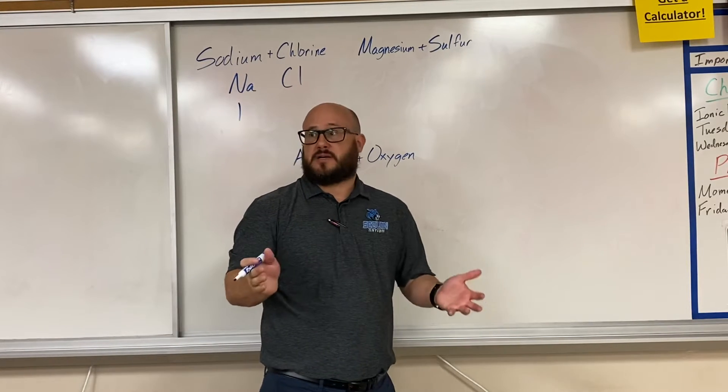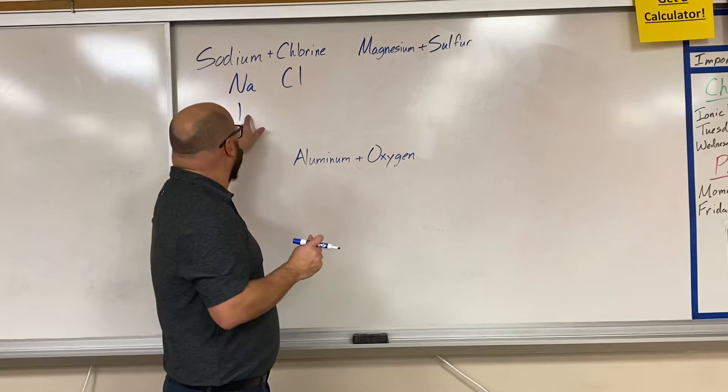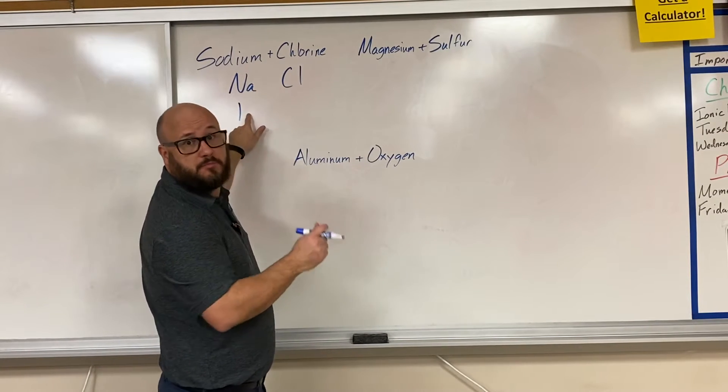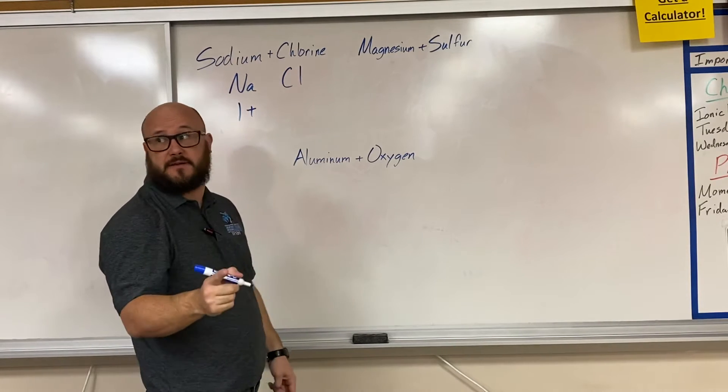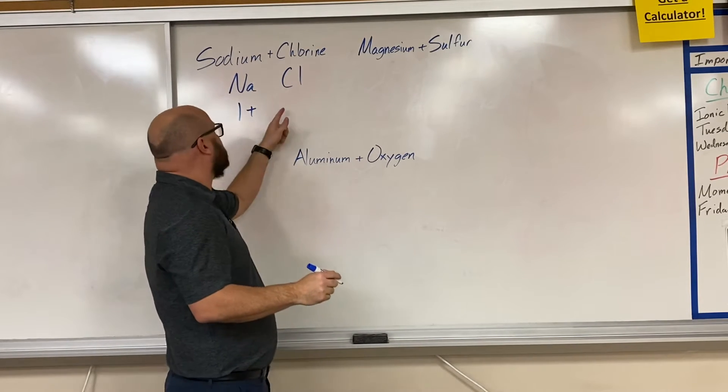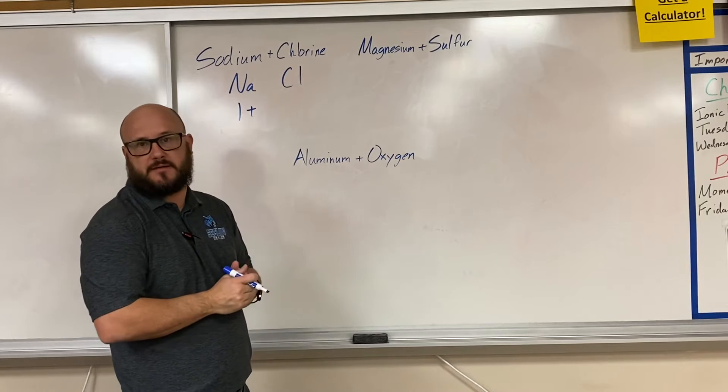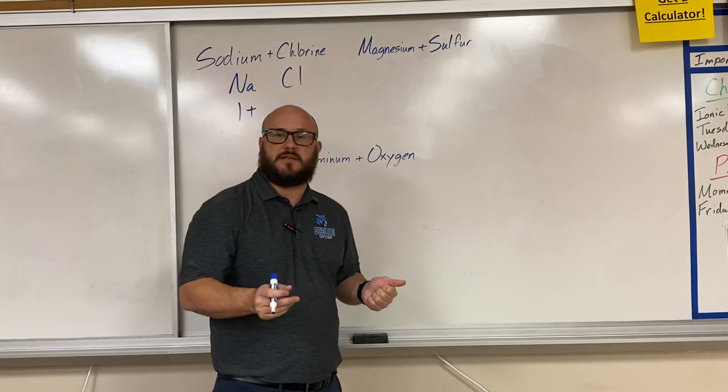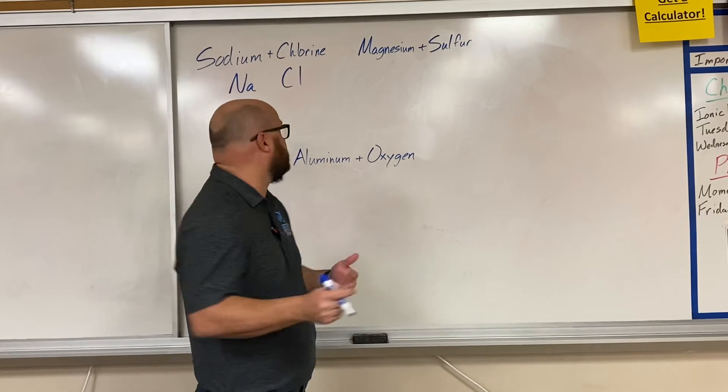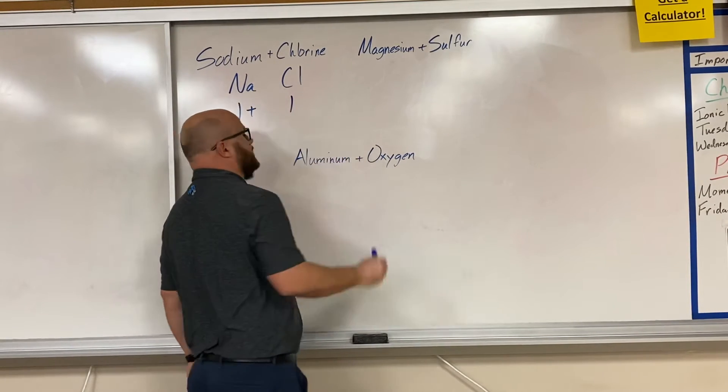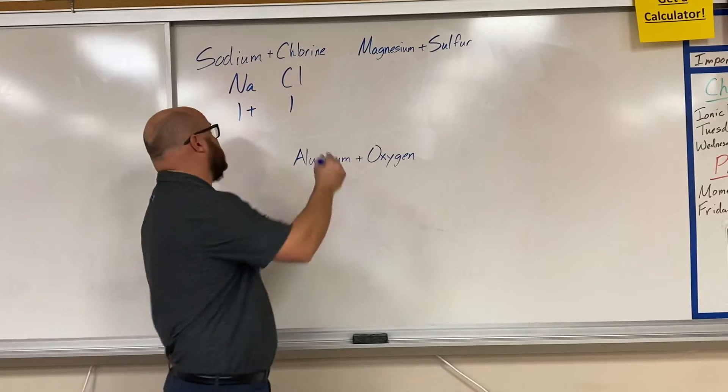Now is it positive or negative? If you lose an electron, you're positive. If you gain an electron, you're negative. Chlorine, over in group 7A, has 7 valence electrons, so it's going to be easier to gain 1 than it is to lose 7. So our number is still going to be 1, but in this case it's going to be negative.